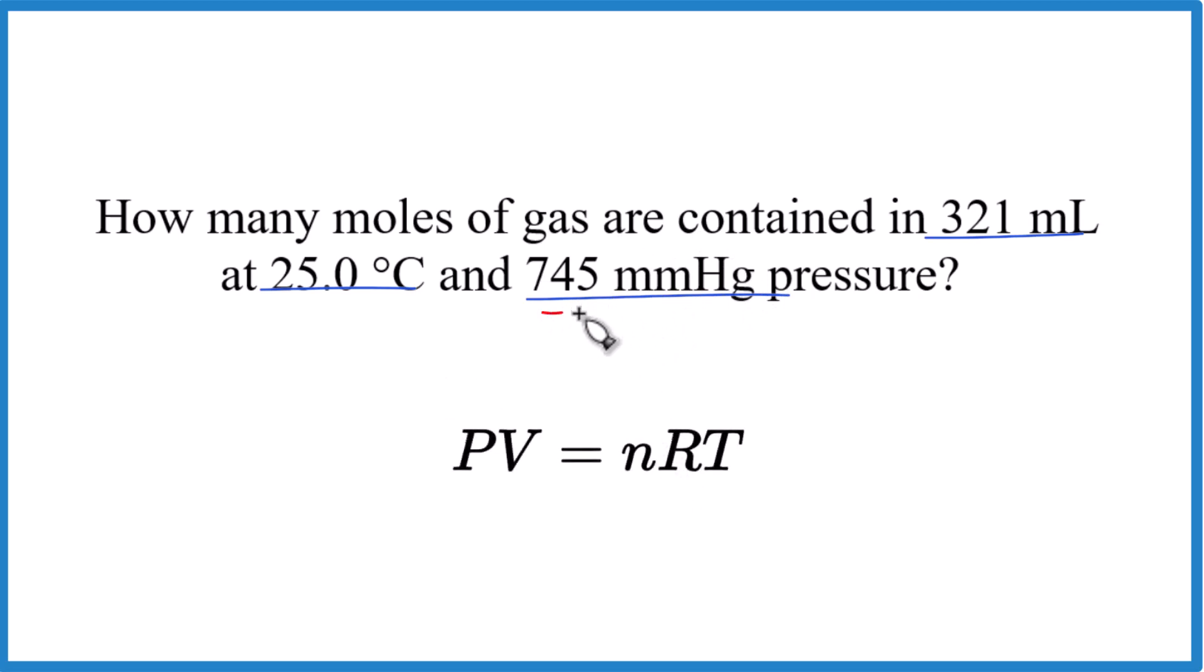So I know that there are 760 millimeters of mercury in one atmosphere. So, these cancel out. We'll be left with atmospheres as our unit. So I end up with 0.98 atmospheres.